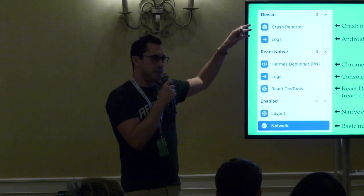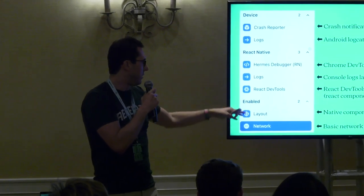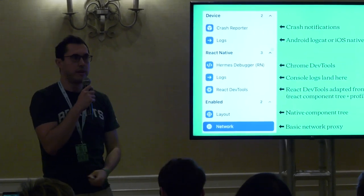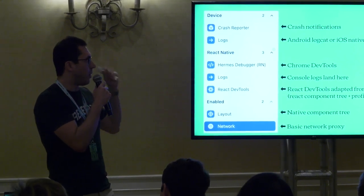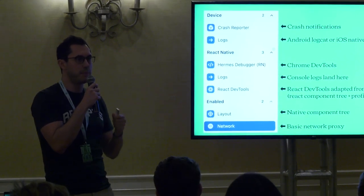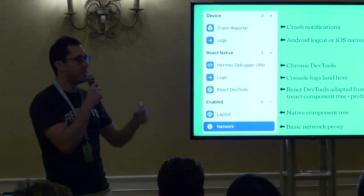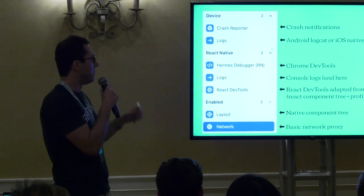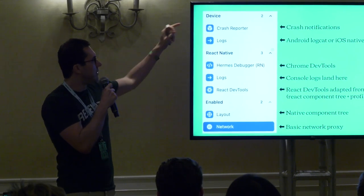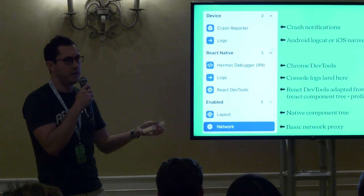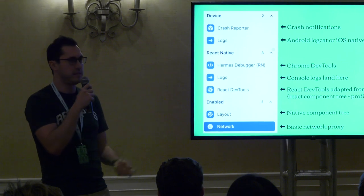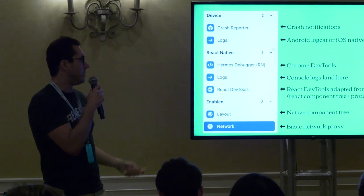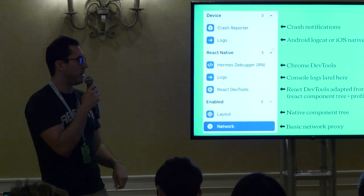Flipper splits its interface into three areas: device-specific plugins, React Native, and plugins you've added yourself. The first thing you'll likely see is the crash reporter — that's where all your crash notifications go, showing the stack trace when your app crashes. Then there are device-specific logs, equivalent to Android Logcat or iOS native logs, for things your device is logging not necessarily specific to your application.